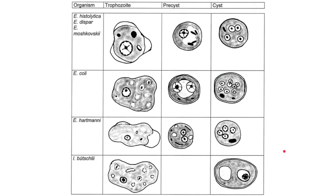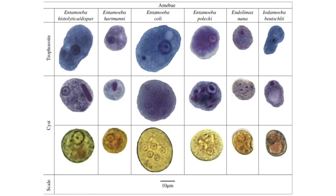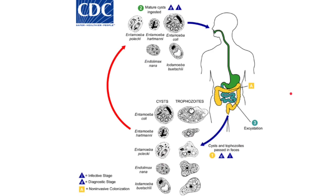Here is a summary of the characteristic morphology of our entamoebas and other commensals. Please take note of their appearances. You can use the characteristic morphology described for each one. The actual appearance under the microscope shows yellowish staining when iodine is used, and violet or bluish color when special stains are applied. For the life cycle of commensals, it is simply cyst and trophozoite forms, and most are transmitted through ingestion of contaminated food or water.